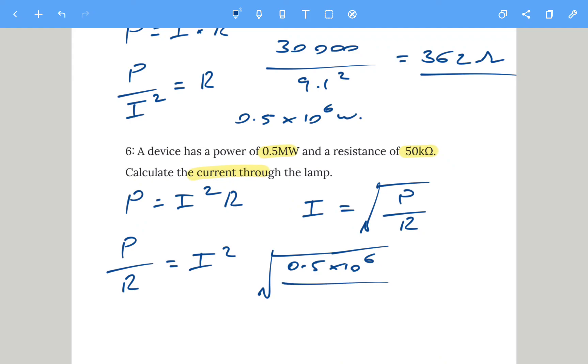You could just write half a million, 500,000. And then 50 kilo ohms, so you could write 50,000 or 50 times 10 to the power of 3. Both the exact same thing. Depends how confident you are with the standard form. The power stuff that you do in maths. Let's put that in the calculator, and we get a current of 3.16 amps.